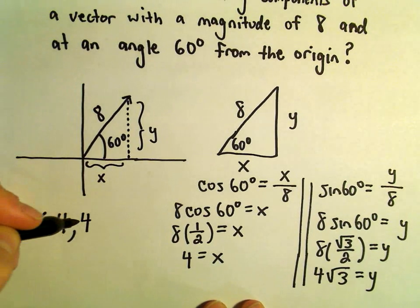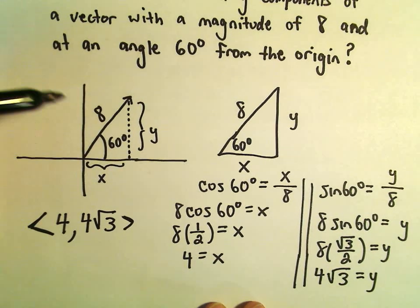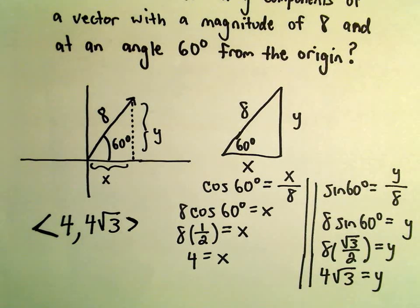That'll be our second component for our vector. This original vector would have components 4 comma 4 square root of 3.